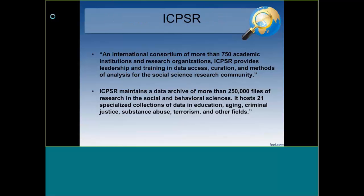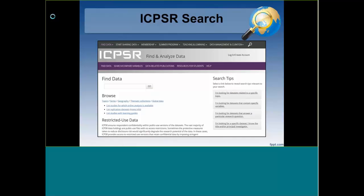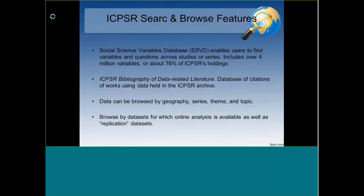Talking briefly about ICPSR: it has a huge data archive of over 250,000 files with specialized collections in education, aging, criminal justice, terrorism, and other fields, and it has more and more access to international survey data. One of the great things about ICPSR is it uses SDA — an online analysis tool — which is a great way for those new to working with microdata to get an introduction and a sense of its power. You can go into ICPSR and look for studies for which online analysis is available, and I'll show a bit of that in a minute.